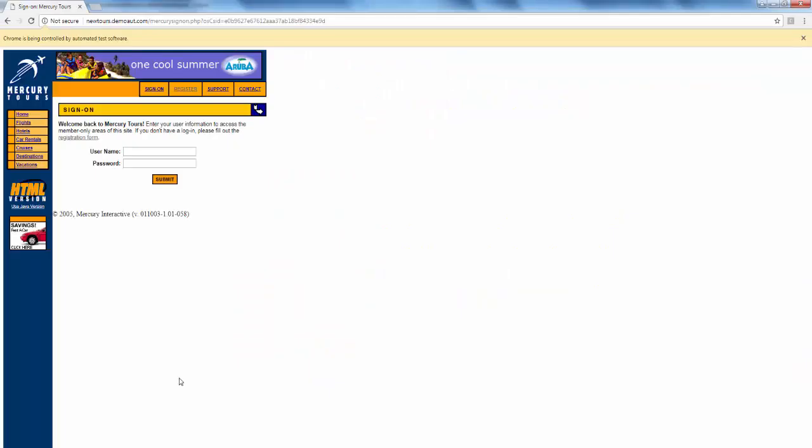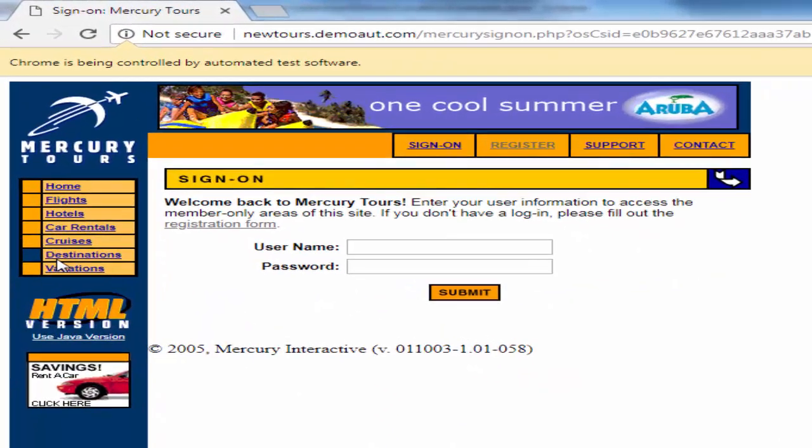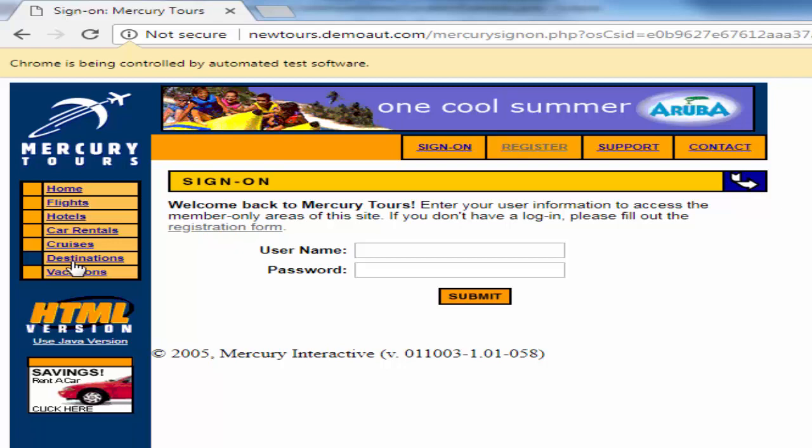Partial link text. In the partial link text I want to give a partial value only. From the name itself you can guess. Instead of destination I am going to give des.